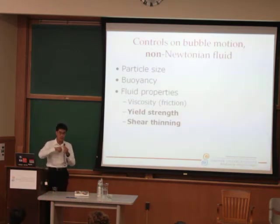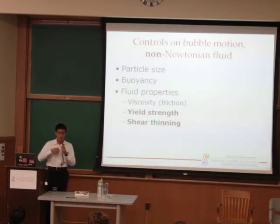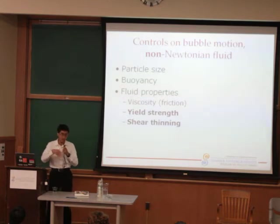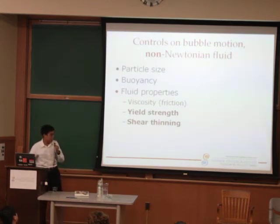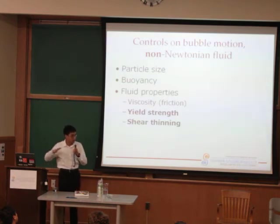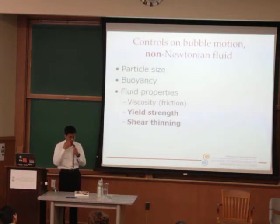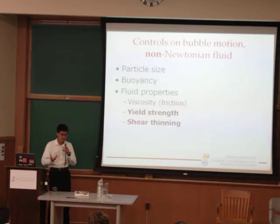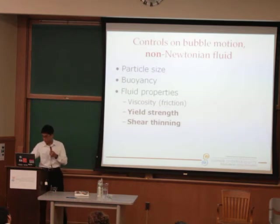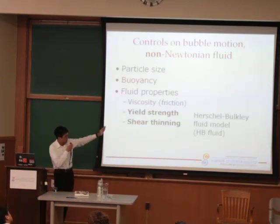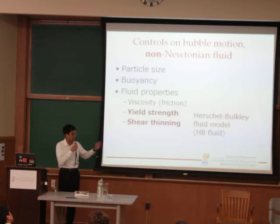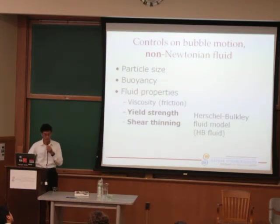As for shear thinning, when you move a fluid it has a viscosity — friction that resists the flow. But with shear thinning, when you try to push the fluid, the effective viscosity decreases. So as you move it faster and faster, it gets easier to move. I'm going to characterize this using the Herschel-Bulkley fluid model — I'll abbreviate it as HB fluid.